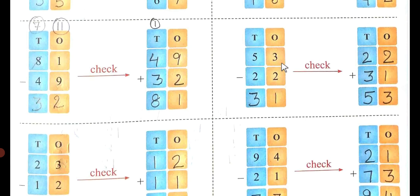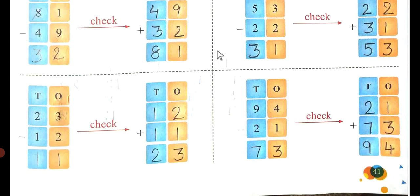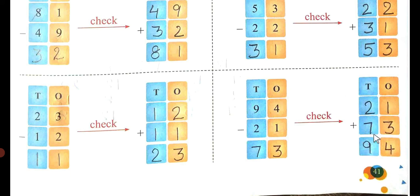53 minus 22: 3 minus 2 is 1, 5 minus 2 is 3, answer is 31. Check: write 22 above and 31 below. 2 plus 1 is 3, 2 plus 3 is 5 — we get 53. Now 23 minus 12: 3 minus 2 is 1, 2 minus 1 is 1, answer is 11. Check: 12 plus 11, 2 plus 1 is 3, 1 plus 1 is 2 — we get 23. Now 94 minus 21: 4 minus 1 is 3, 9 minus 2 is 7, answer is 73. Check: write 21 and 73, 1 plus 3 is 4, 2 plus 7 is 9 — we get 94. The answer is correct.